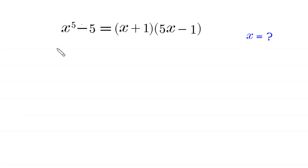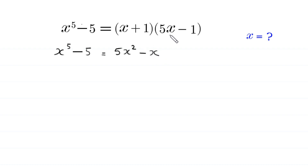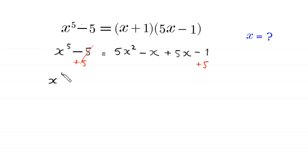Let's start. x⁵⁵ equals x times 5x, which becomes 5x², plus x times negative 1 giving negative x, plus 1 times 5x giving 5x, plus 1 times negative 1 giving negative 1. Now we add 5 to both sides so this equation becomes x⁵ = 5x² + 4x + 4, since negative x plus 5x is 4x and negative 1 plus 5 is 4.